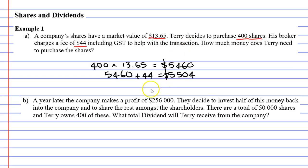Let's now move on to question B. It says, a year later, the company makes a profit of $256,000. They decide to invest half of this money back into the company, and to share the rest amongst the shareholders. There are a total of 50,000 shares, and Terry owns 400 of these. What total dividend will Terry receive from the company?